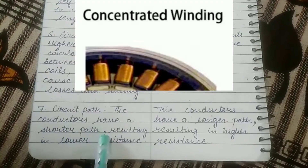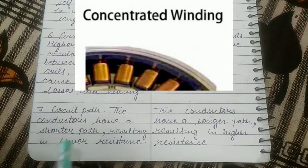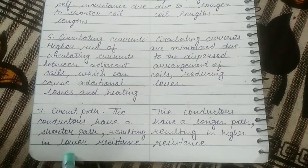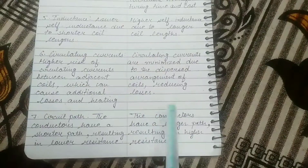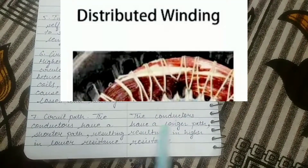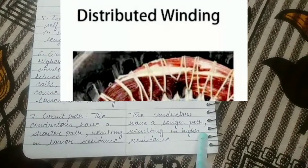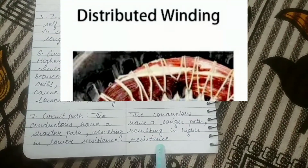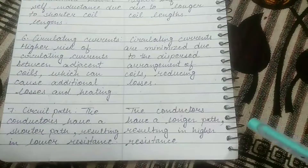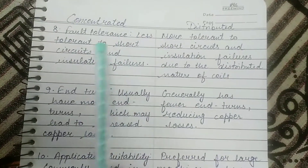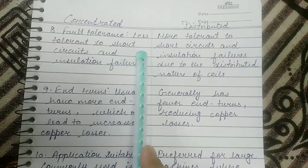The next difference is circuit path. In concentrated winding, the conductors have a shorter path, resulting in lower resistance and losses. But in distributed windings, the conductors have a longer path, resulting in higher resistance and losses.